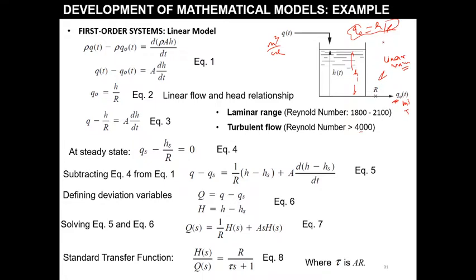As R increases, Q_naught will obviously decrease. This is the equation for the linear valve. For the mass balance equation, units are in meter cube per second. Density equals mass upon volume, which is kg per meter cube, so mass flow becomes kg per second — mass entering, mass leaving, and mass accumulating in the tank.